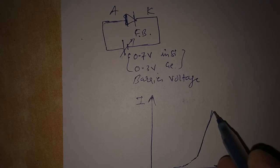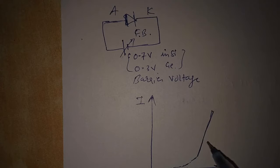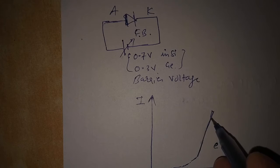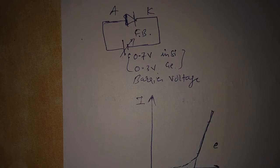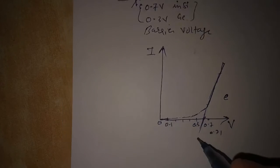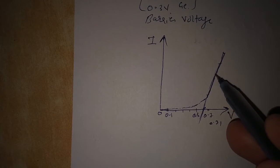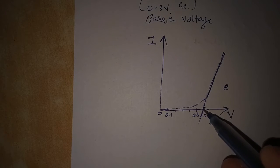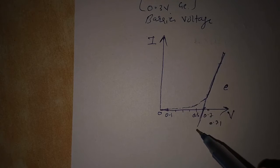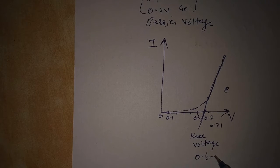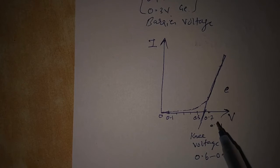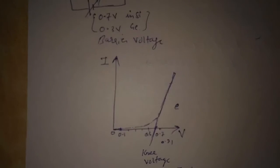Generally the steep region is assumed as linear, but in fact the whole characteristic is exponential. The latter portion is slightly linear, so we can assume that portion as linear. If we extend a straight line downward and find where it crosses the horizontal axis, that point is called the knee voltage. The knee voltage is approximately between 0.6 and 0.7 volts.